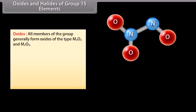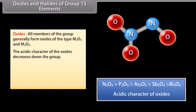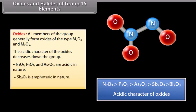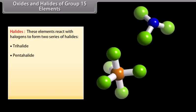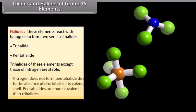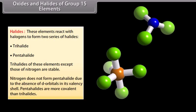Oxides and halides of group 15 elements: All members generally form oxides of the type M2O3 and M2O5. The acidic character of the oxides decreases down the group. N2O3, P2O3 and As2O3 are acidic; Sb2O3 is amphoteric; and Bi2O3 is basic. These elements react with halogens to form trihalides and pentahalides. Trihalides are stable except those of nitrogen. Nitrogen does not form pentahalide due to the absence of d-orbitals in its valence shell. Pentahalides are more covalent than trihalides.